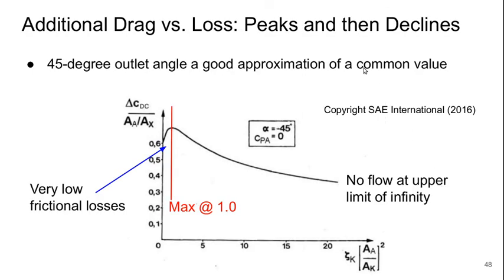So the additional drag versus loss that we get from this can be visualized versus the product of loss coefficient times A over AK. And basically the drag rises up to a value of 1 for this where we have really low friction loss and then it starts dropping. This is assuming a 45 degree outlet angle. At the upper limit where this thing starts going to infinity there is basically no flow through the internal cooling channels.